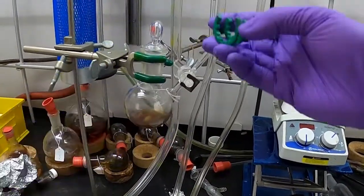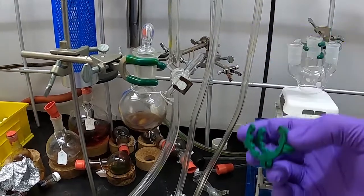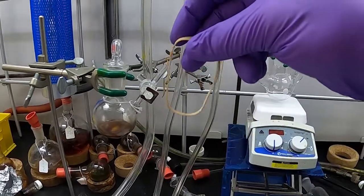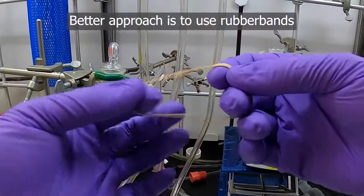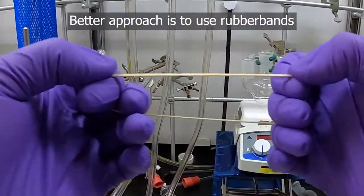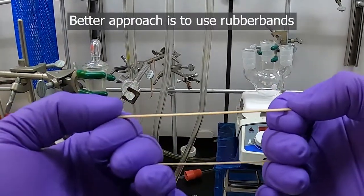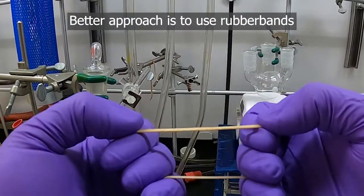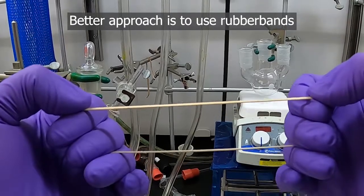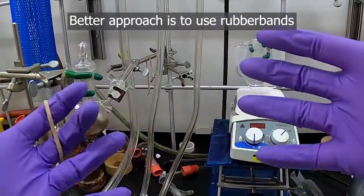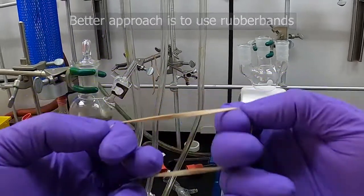A better approach is to use rubber bands. The case with rubber bands is when you see them, they stretch, and that's really useful when using Schlenk lines. What will happen is as you start to build up pressure, the rubber bands will stretch, causing the respective joint to open up, release the pressure, and then seal back up as the rubber bands pull it together.